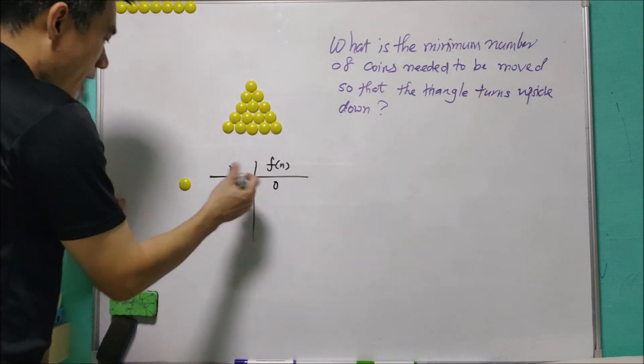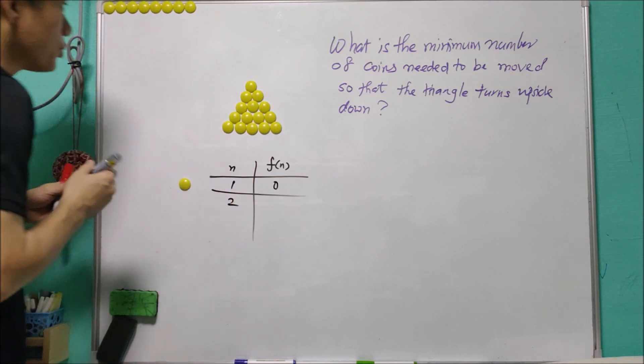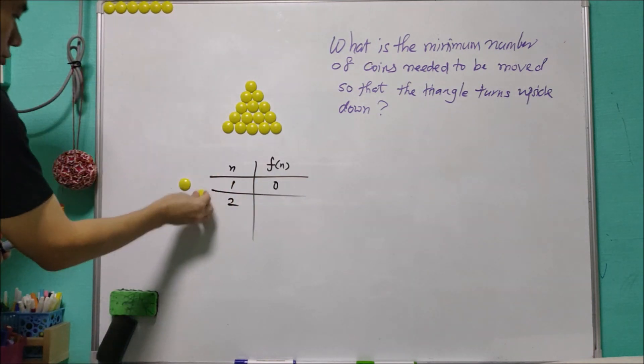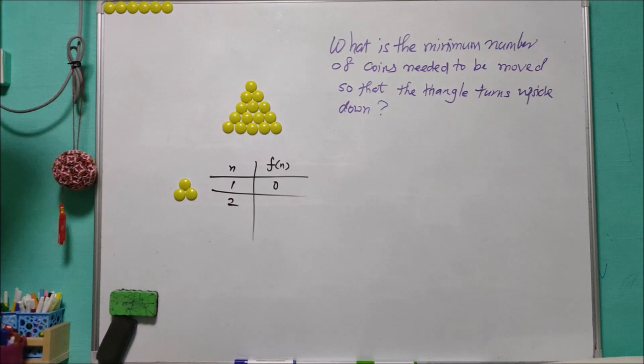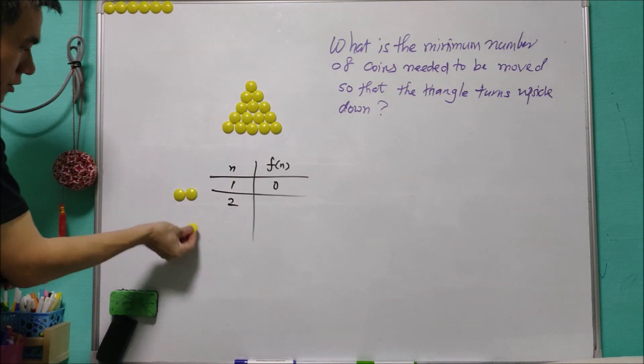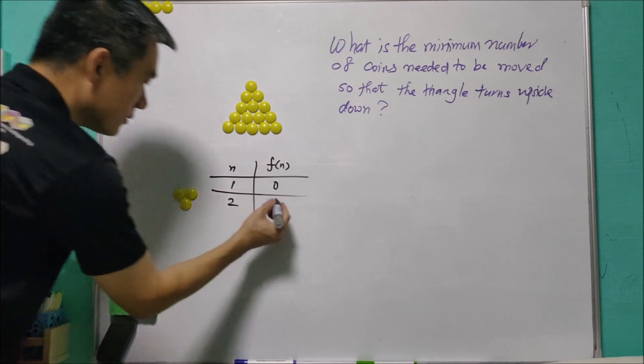When n equals 1, f(n) equals 0. When n equals 2, meaning that we have two rows, in this case obviously we just need to move one coin, and that is one.